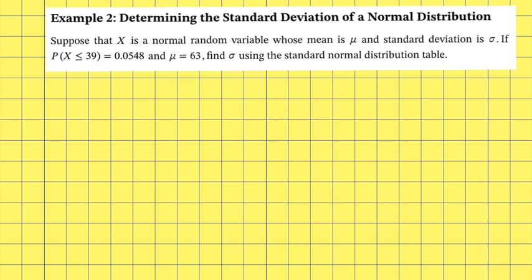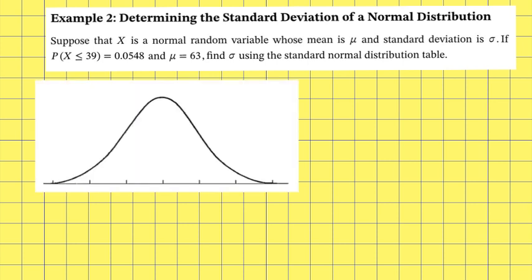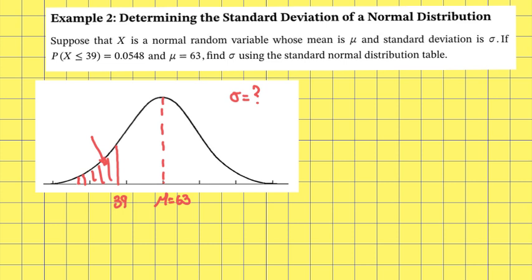The first thing you should always do is draw yourself a diagram. I'm told that the mean is 63. I want to find the standard deviation. I'm also told that for x less than or equal to 39, that region has a probability of 0.0548.